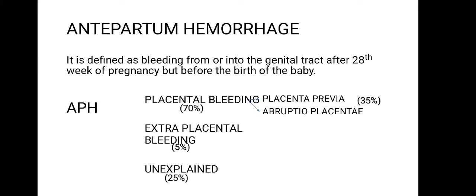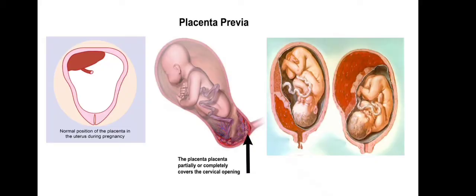Regarding incidence, about 70 percent constitutes placental bleeding, 25 percent is unexplained, and only 5 percent is extra-placental bleeding. The incidence of placenta previa and abruptio placenta is the same, each at 35 percent.